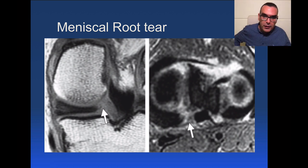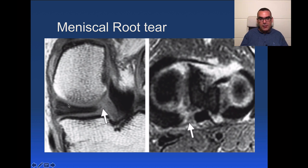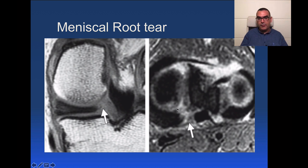An important variant is the meniscal root tear. The meniscal root must always pass the edge of the condyle; when you don't see it, this is a meniscal root tear. It is essentially a radial tear. The coronal scan demonstrates the root tear, and the corresponding axial scan shows a radial defect — the defect is perpendicular to the long axis of the meniscus.